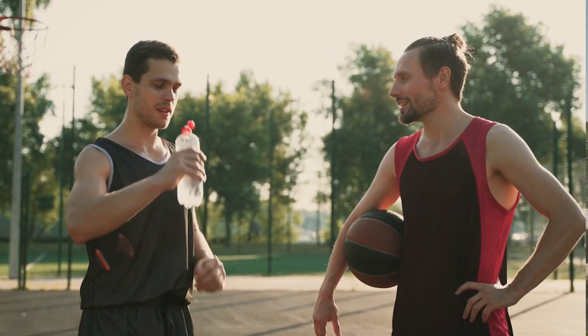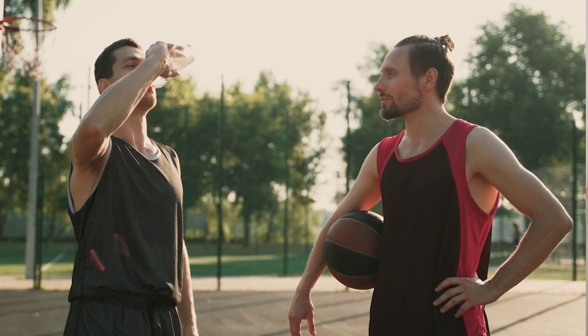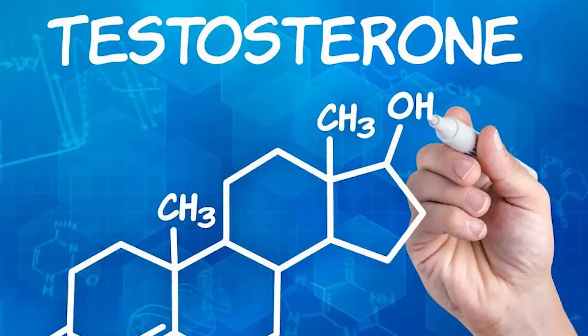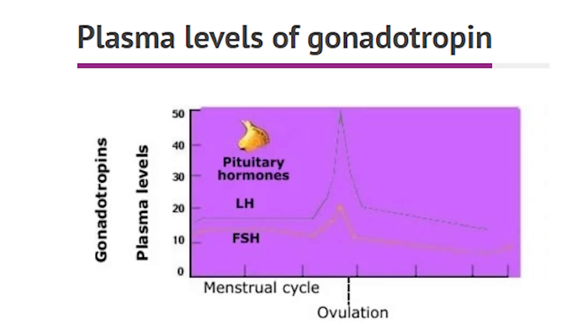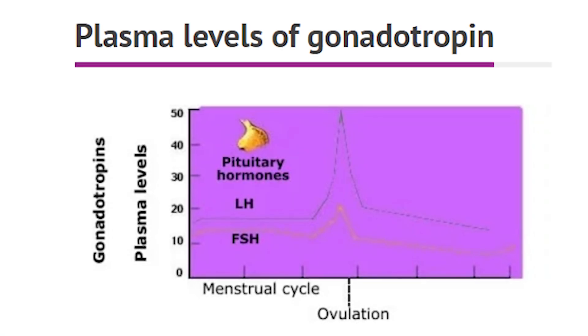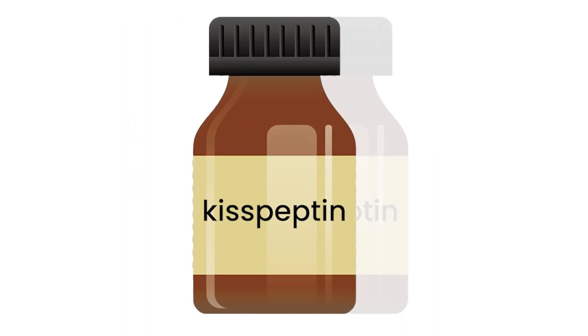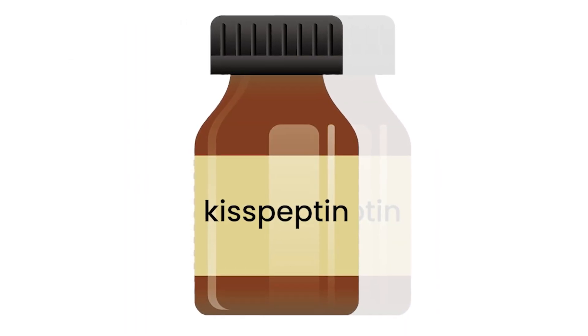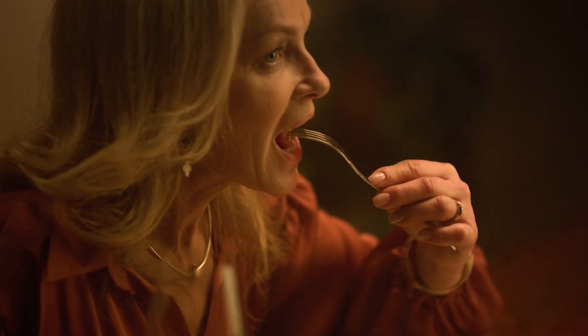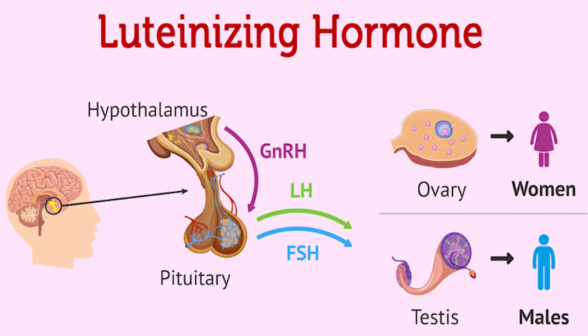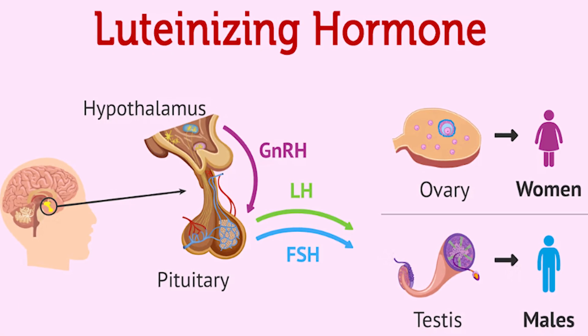In healthy males, the infusion of Kisspeptin increased testosterone and plasma gonadotropin levels, while the infusion of Kisspeptin subcutaneously in healthy premenopausal females increased luteinizing hormone, LH.